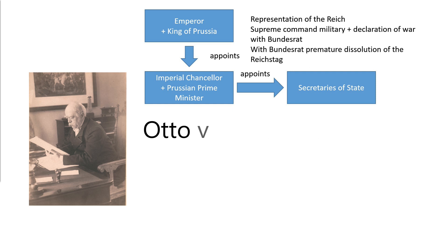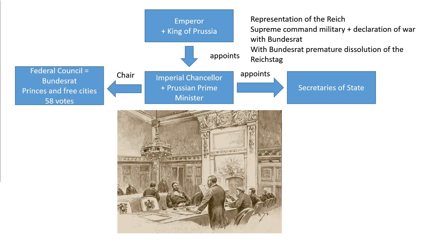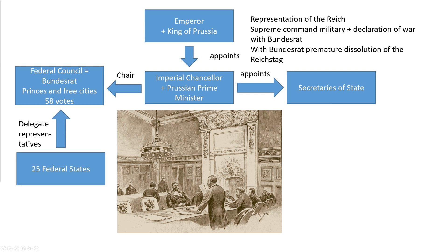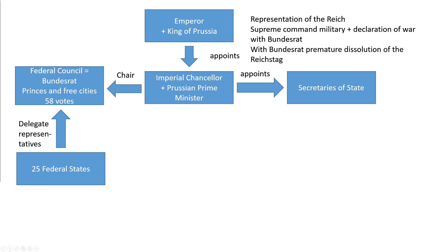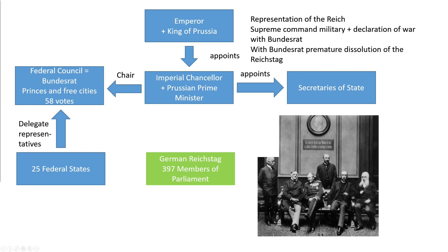The state secretaries reported to the imperial chancellor, not to the emperor. In addition, the imperial chancellor chaired the federal council. This consisted of the princes of the 25 federal states and three cities — the cities of Bremen, Hamburg and Lübeck — who usually sent representatives. The press occasionally criticized that these representatives were not the brightest. There were 58 seats and thus votes. The Reichstag consisted of 382 deputies in 1871 and 397 deputies from 1874, because 15 constituencies of Alsace-Lorraine were added.